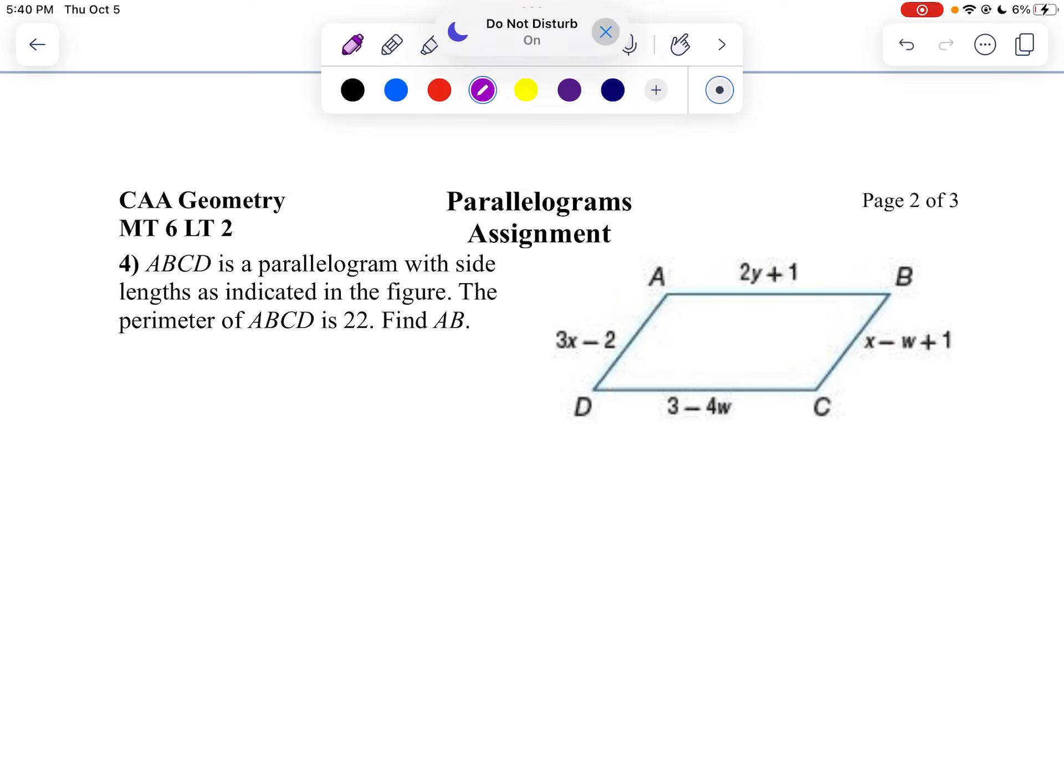Hey, let's take a look at page 2 of your assignment and question number 4. We've got ABCD's parallelogram with the side lengths shown. We know the perimeter is 22, so I'm going to just put that in there to remind me the perimeter is 22. And we want to find AB.